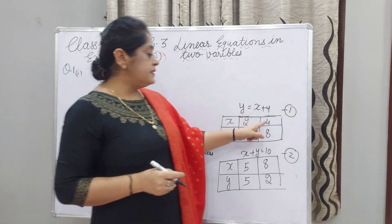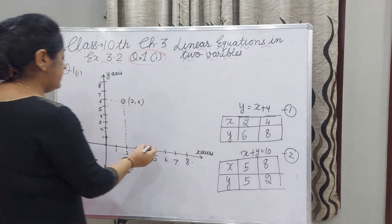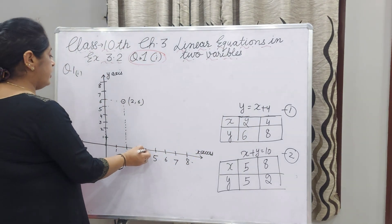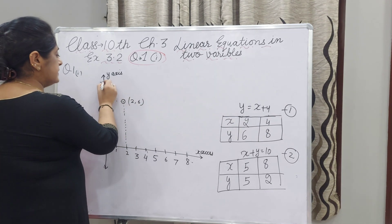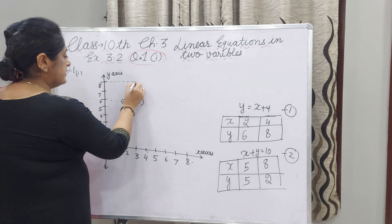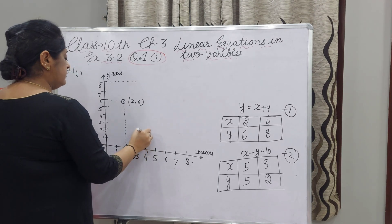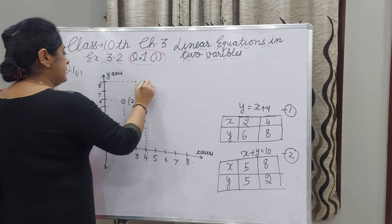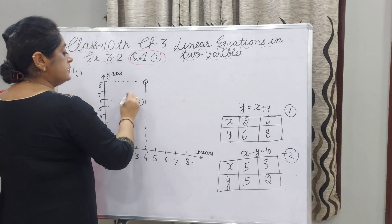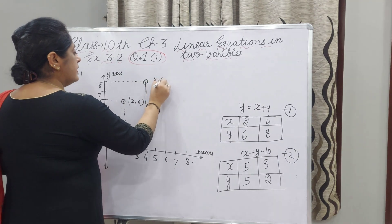Now we will draw the second point: X is 4 and Y is 8. Both lines are perpendicular to each other. Here I get my second point, 4 and 8.